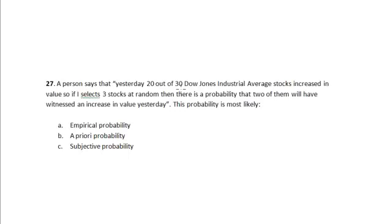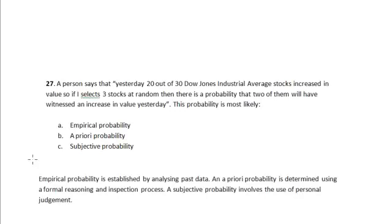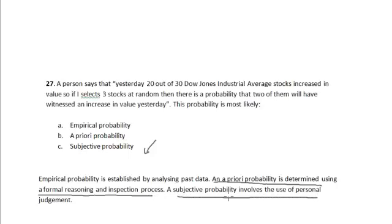This probability is most likely known as empirical probability, a priori probability, or subjective probability. An empirical probability is established by analyzing past data. A priori probability is determined using formal reasoning and an inspection process. A subjective probability involves the use of personal judgment.